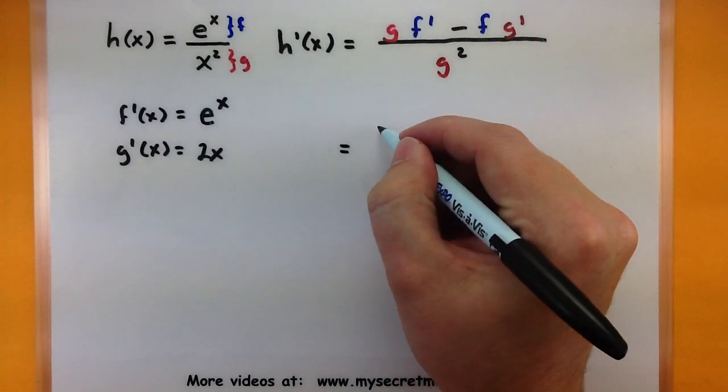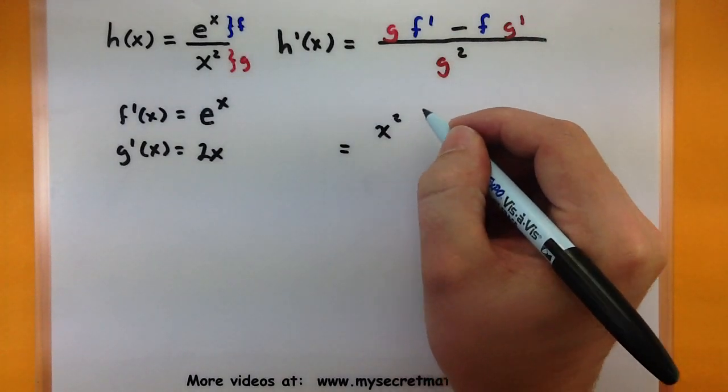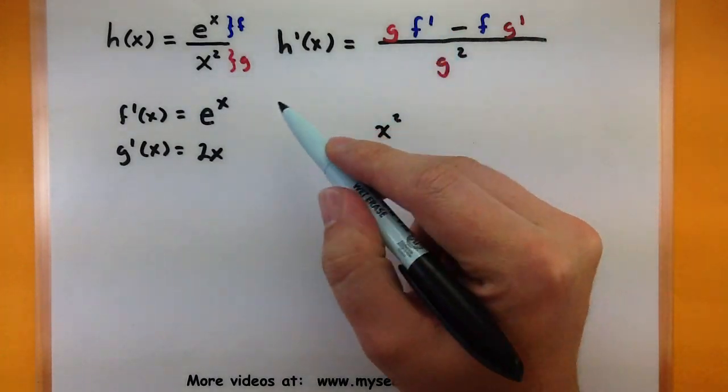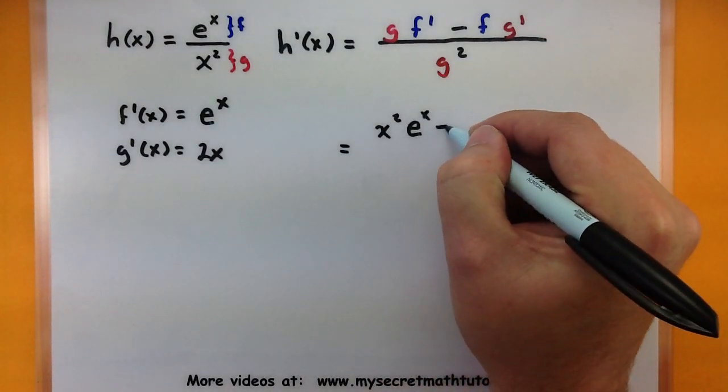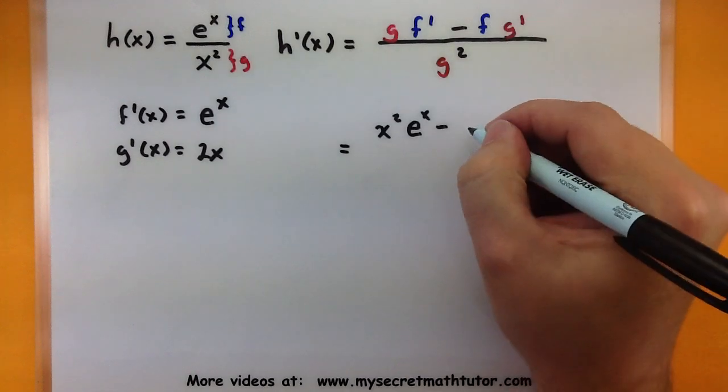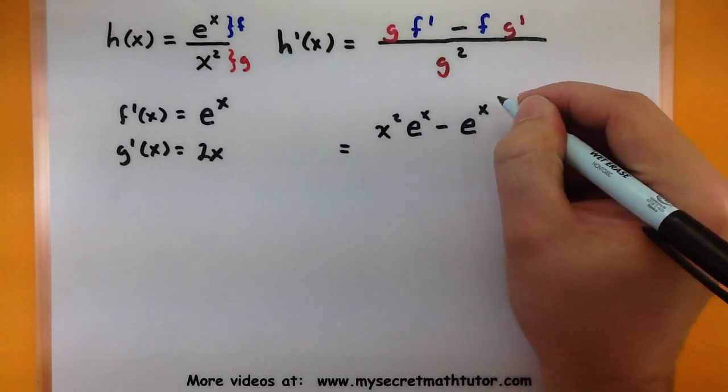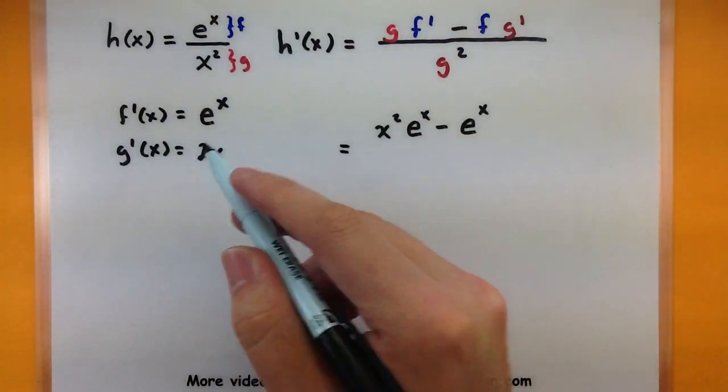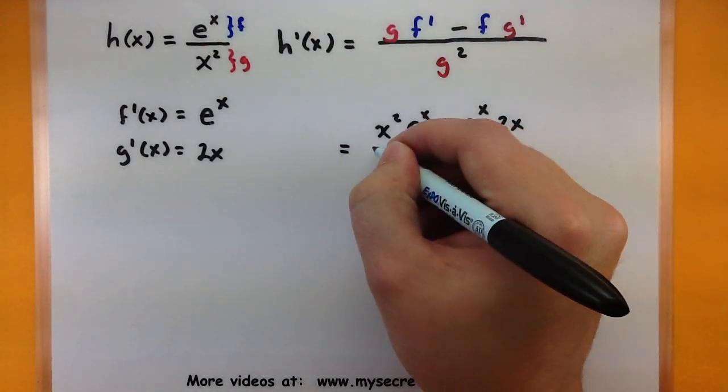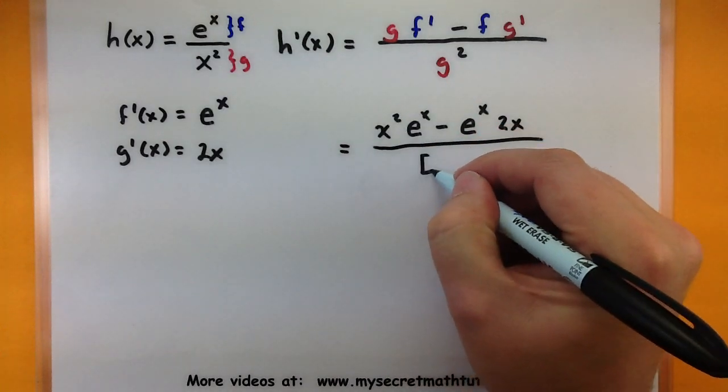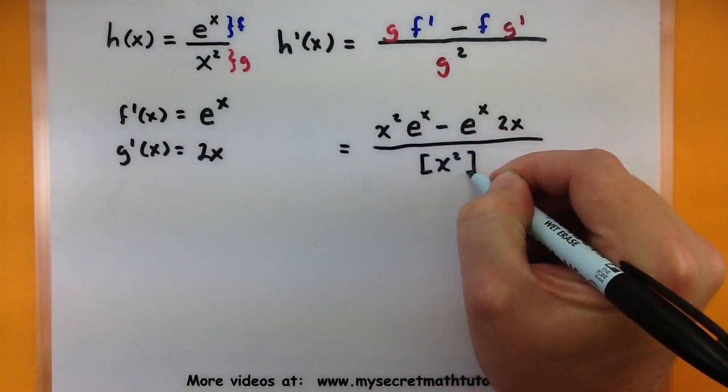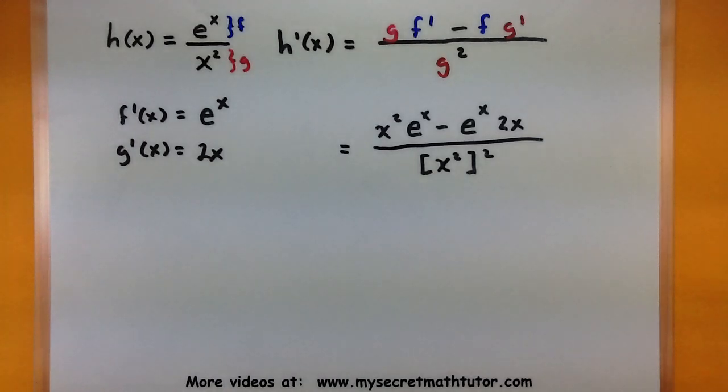So let's start with our bottom function. This is x squared multiplied by the derivative of f, so e to the x minus f, which is e to the x, multiplied by the derivative of g, we found it over here, 2x all over. The bottom function just as it is, so x squared, and then we're going to square it again.